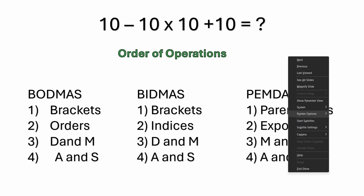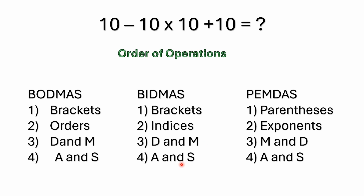If you recall, there's a thing called the order of operations, which has its roots all the way back to the 16th century. It's something that's been taught through school — in North America, elementary school. In the UK I believe it would be primary school. The order of operations basically consists of four steps.